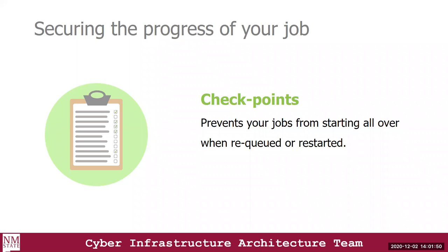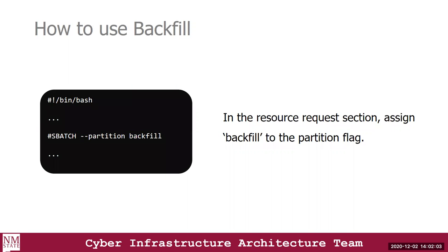A checkpoint basically prevents you from starting all over again whenever your job is kicked out, requeued, or restarted. To use the backfill partition, in the resource request section of your batch script, you use the SBATCH directive followed by the partition flag, and then assign the value 'backfill' — that's how you gain access to the backfill partition.